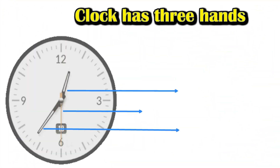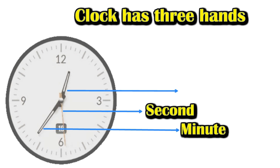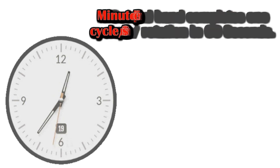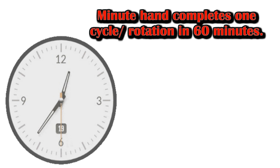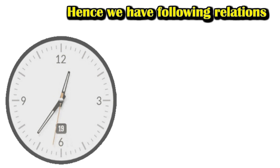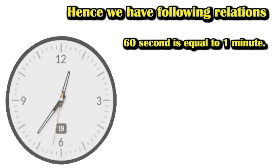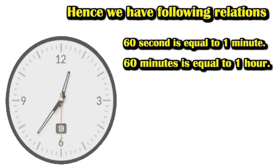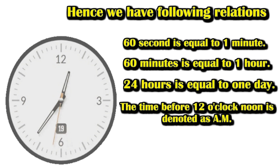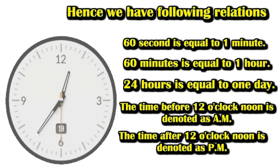A clock has three hands: minute, second, and hour. The second hand completes one rotation in 60 seconds. The minute hand completes one rotation in 60 minutes. The hour hand completes one rotation in 12 hours. Hence, 60 seconds equals 1 minute, 60 minutes equals 1 hour, and 24 hours equals 1 day. The time before 12 o'clock noon is denoted as AM, and the time after 12 o'clock noon is denoted as PM.